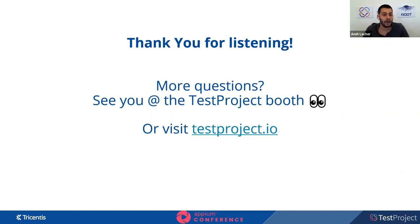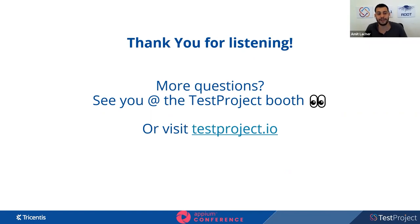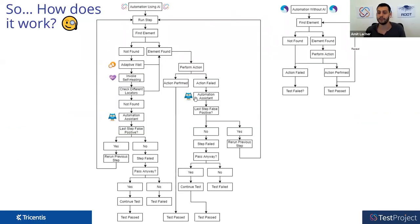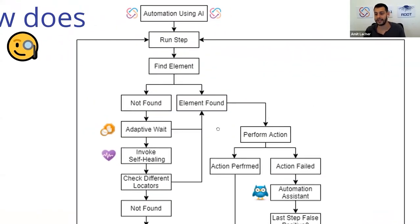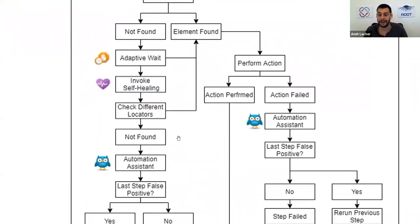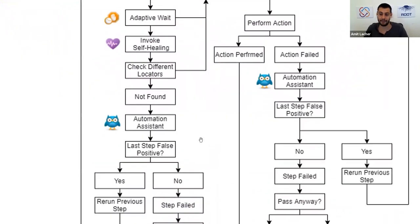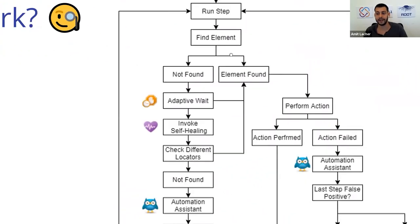Regarding how AI finds false positives: it uses multiple calculations — checking how fast the action was performed, whether the next element can be found, whether the previous element could be found. It applies a lot of logical calculations based on the test and that specific automation to determine whether to rerun the previous step. Going back to that slide, when an element is not found, we detect if the step is a false positive, then run it again and look for the element one more time.